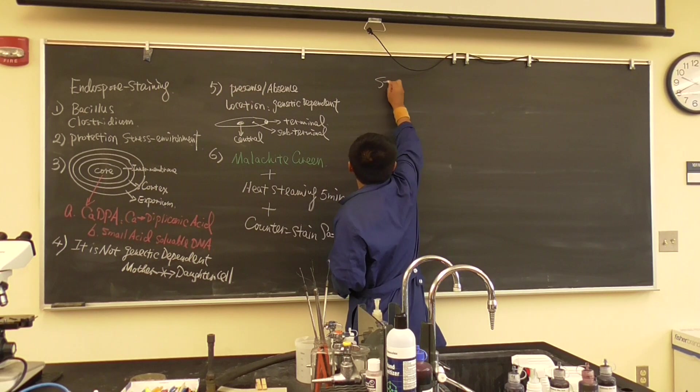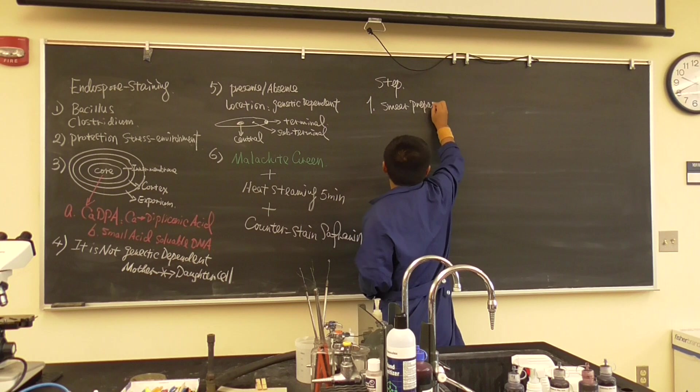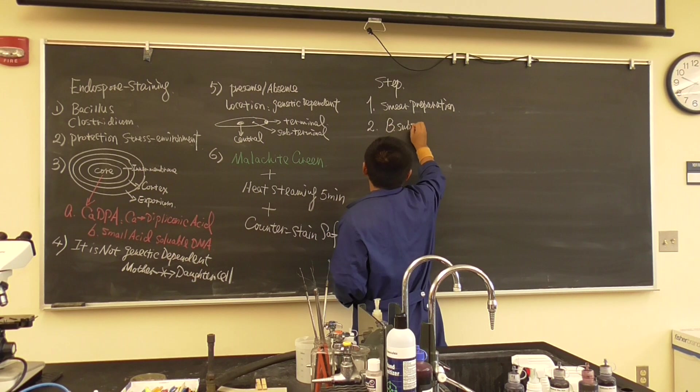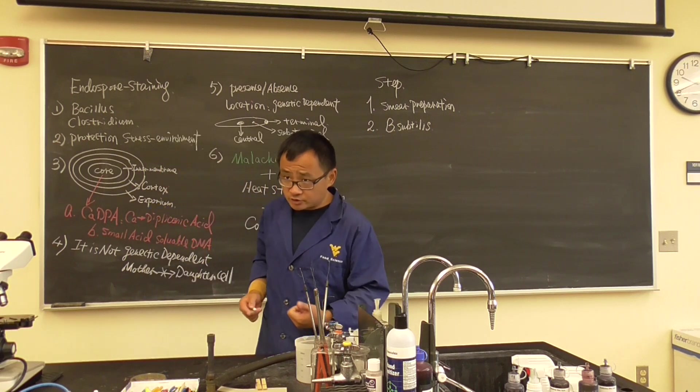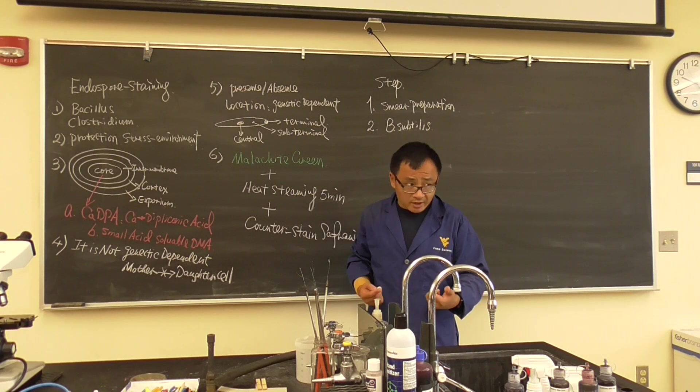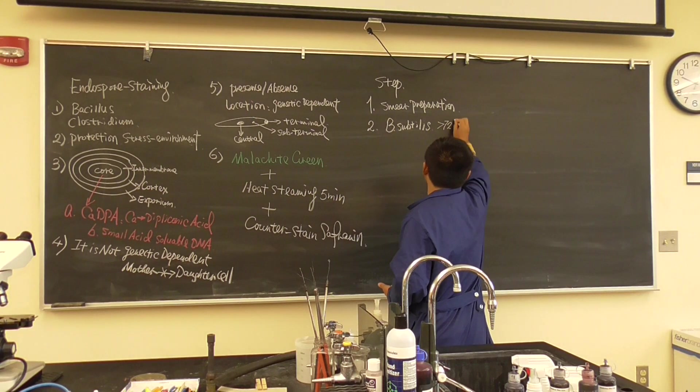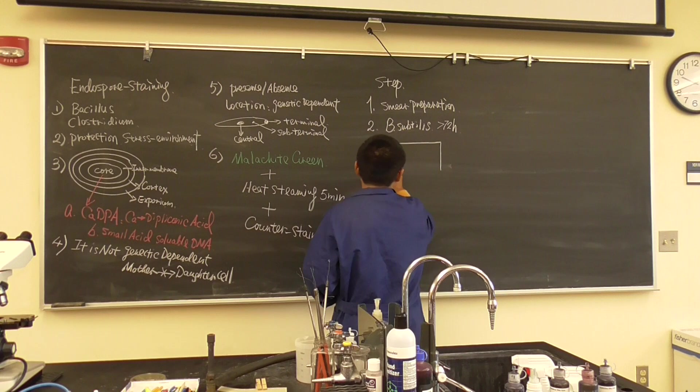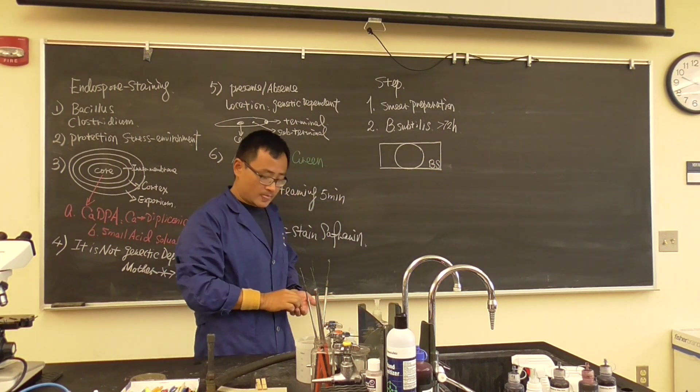So that's all the major information regarding the background of the endospore stain. Now let's talk about the steps - what are we going to do today? Number one is the same as smear preparation. Today we are using the bacteria Bacillus subtilis, and I said different from the gram stain. Gram stain we need to use a very young culture because it is based on the cell wall structure. Endospore stain we want them to have the endospores, therefore it needs to use older culture, so this Bacillus subtilis is more than 72 hours.